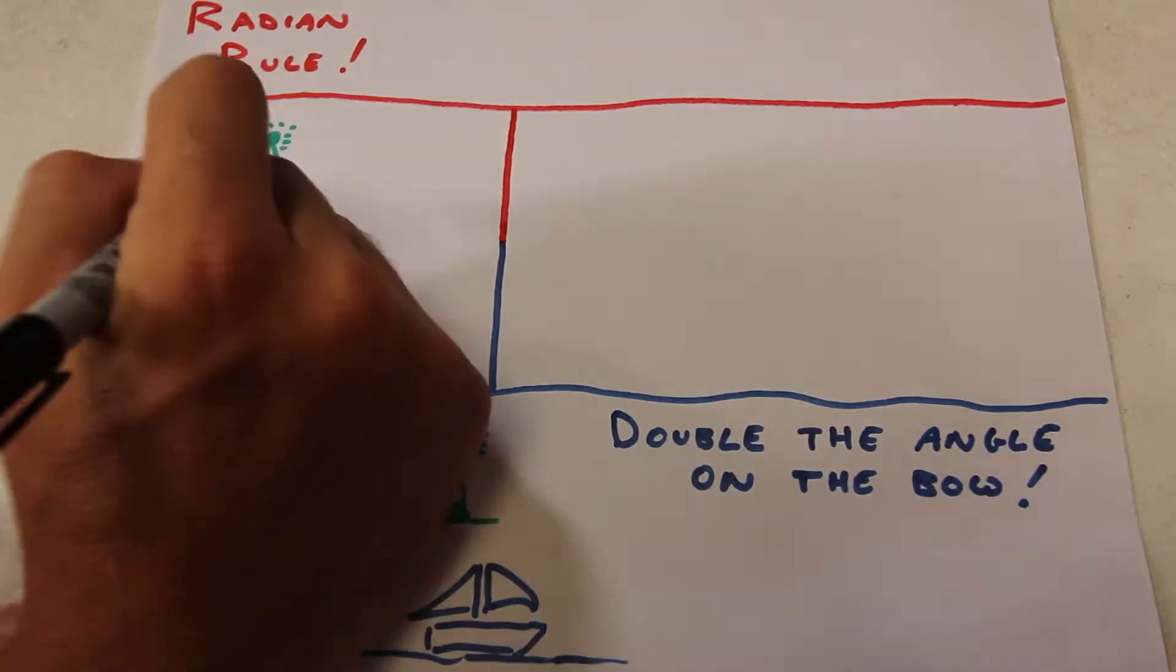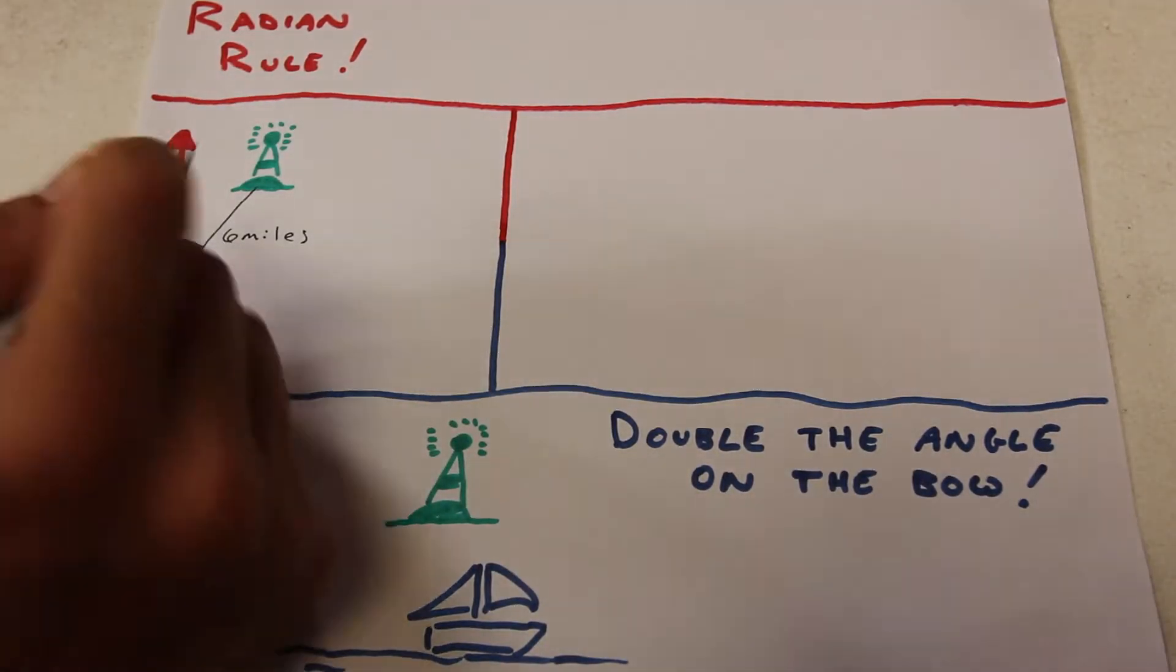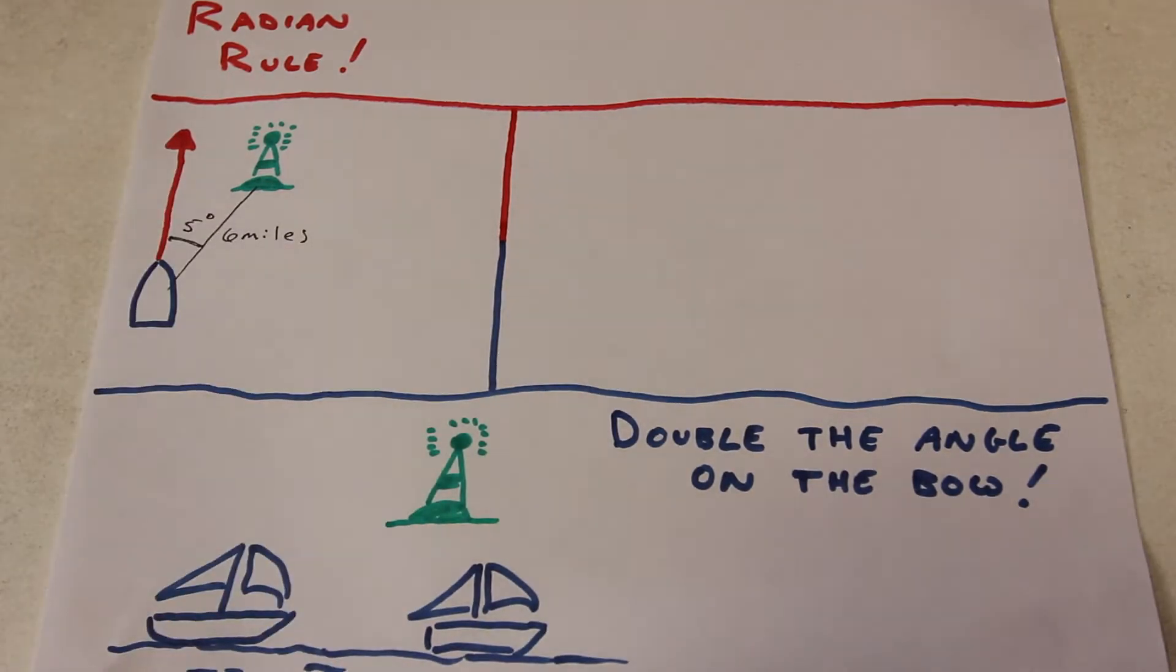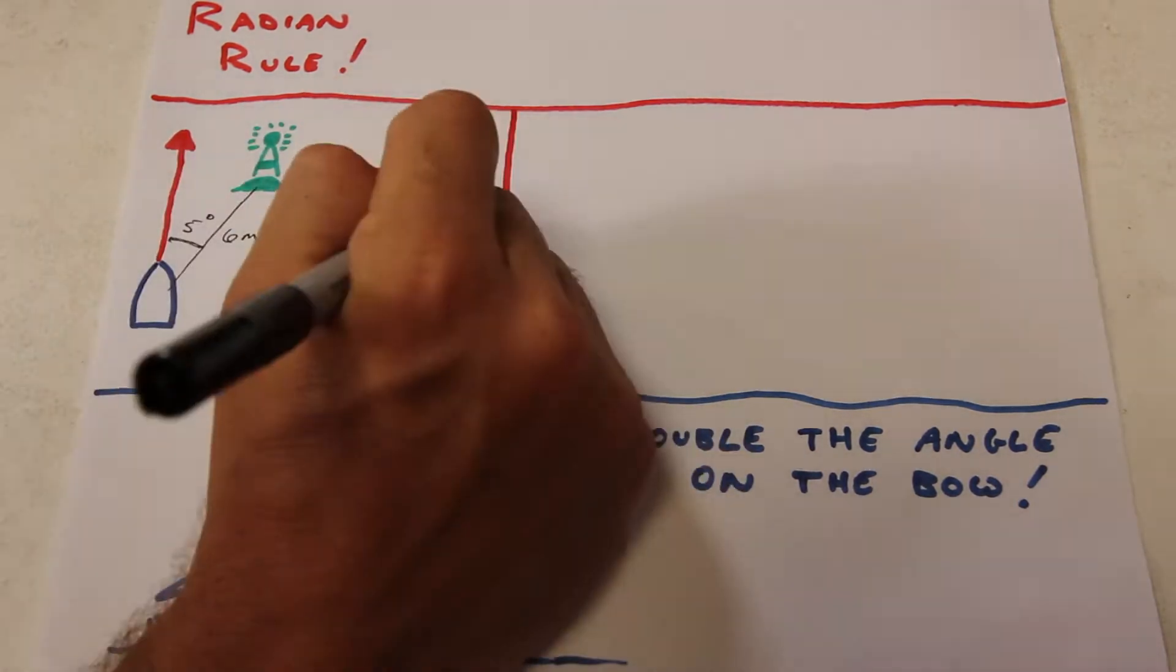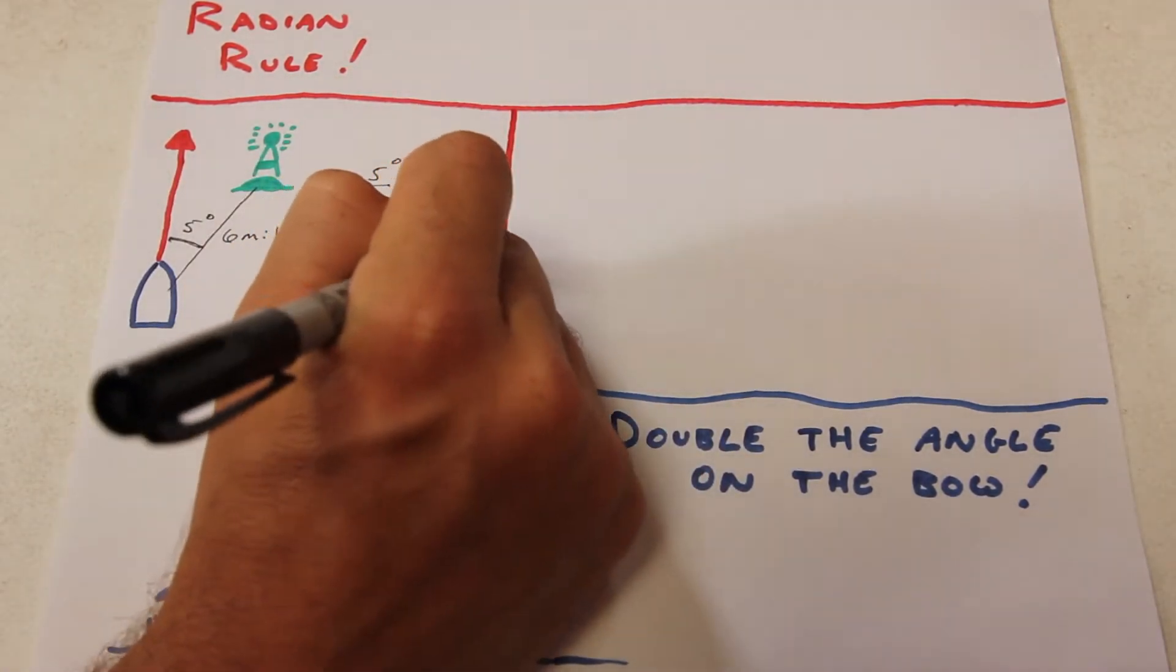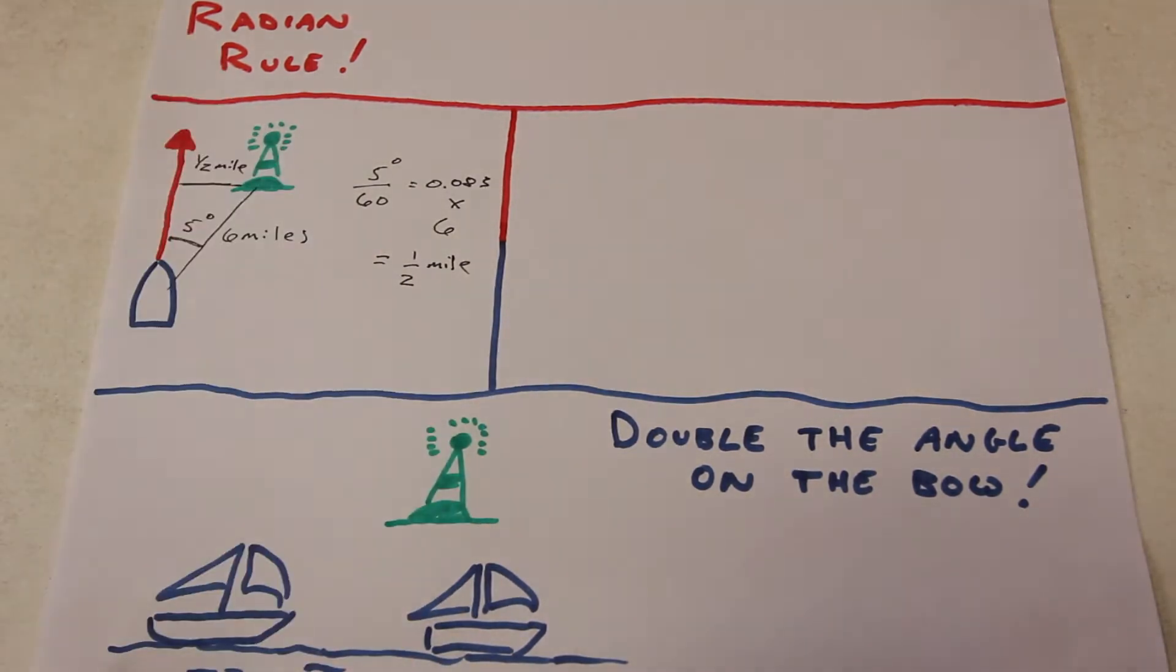If you were steaming along and radar told you that a lighthouse was six miles away and then you measured an angle off the bow to be five degrees, if you take that angle, divide it by sixty, and then multiply by the distance you measured, it will yield the distance off at closest point of approach, which in this case is a half mile.